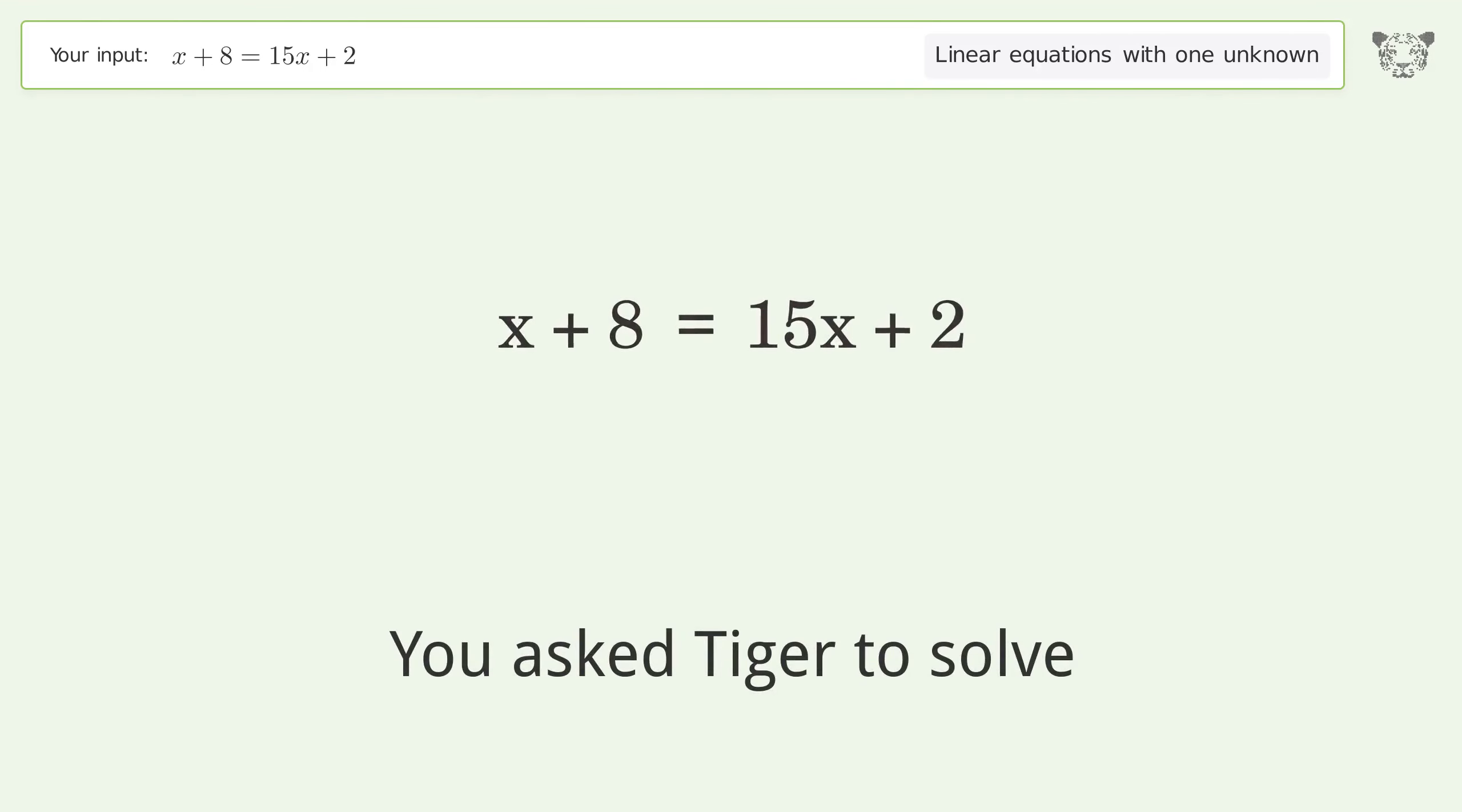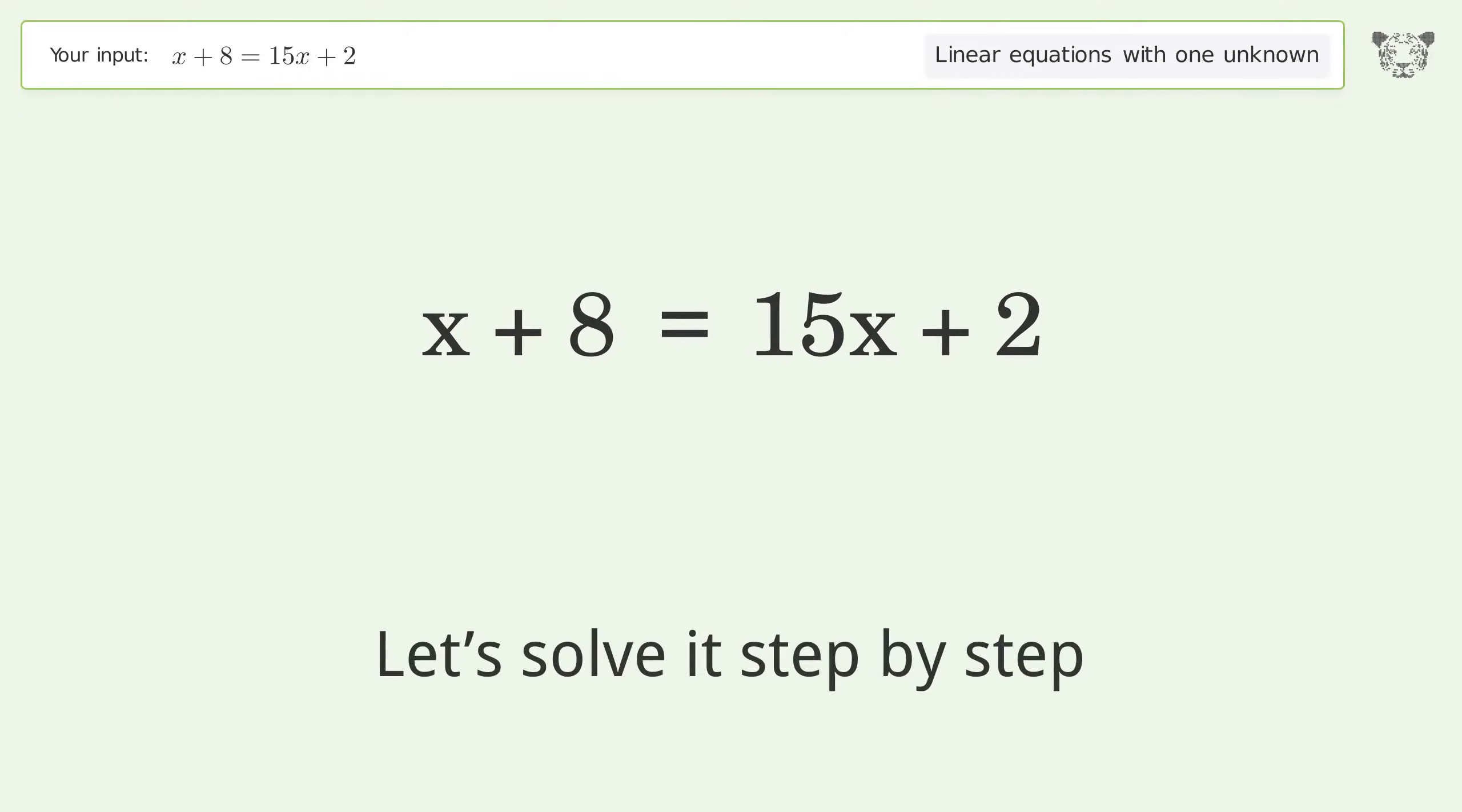You asked Tiger to solve. This deals with linear equations with one unknown. The final result is x equals 3 over 7. Let's solve it step by step.